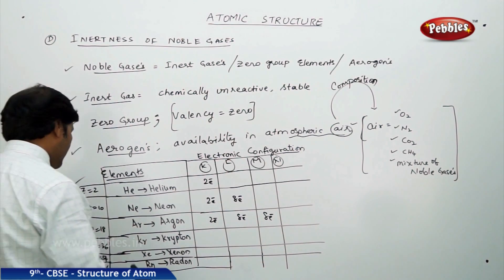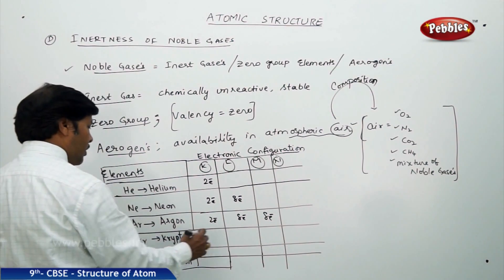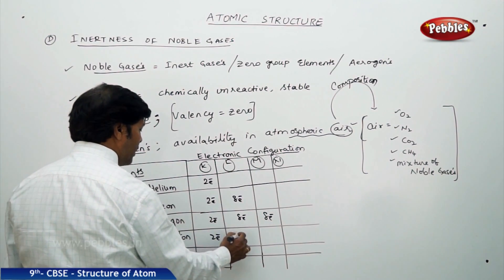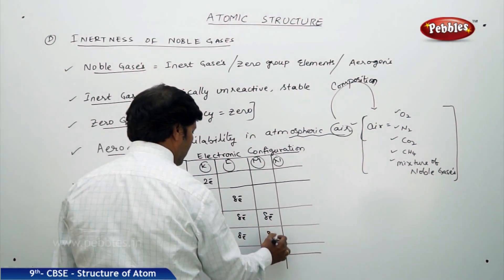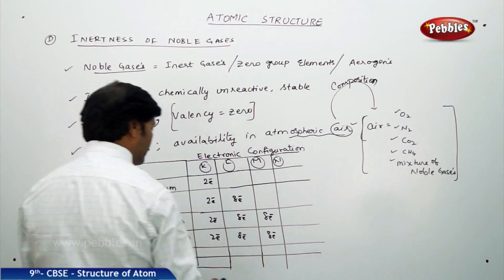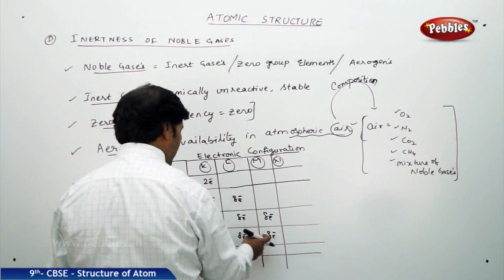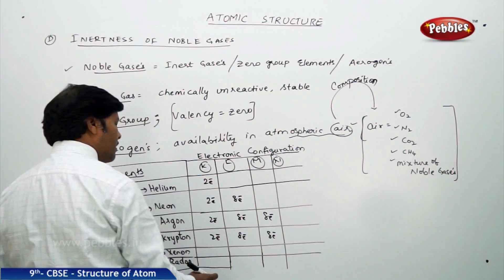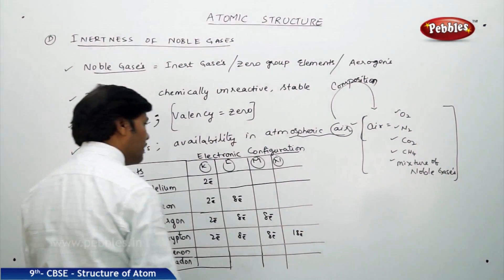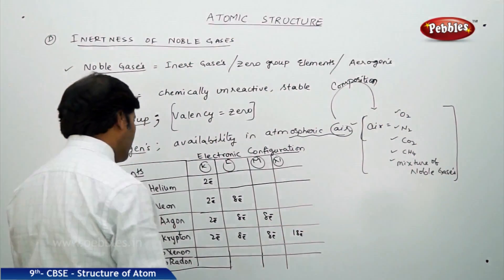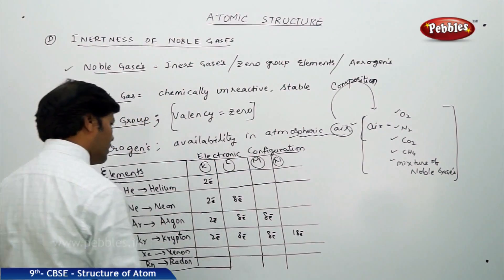For argon, atomic number 18 means 18 electrons in a neutral atom: 2 electrons in K, 8 in L, and 8 in M — giving 2 plus 8 plus 8 equals 18. For krypton with atomic number 36, the distribution is 2, 8, 8, 18, and 2 plus 8 plus 8 plus 18 equals 36.